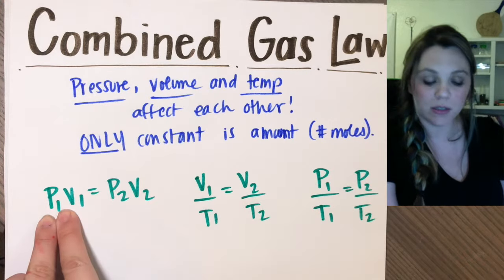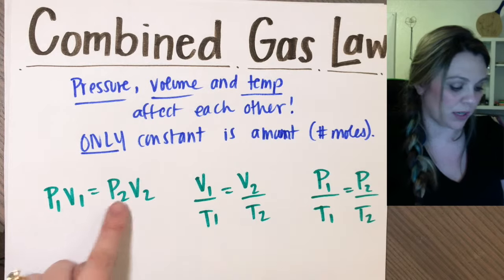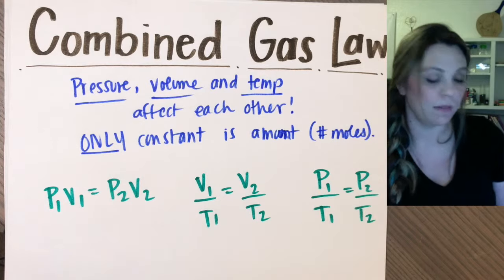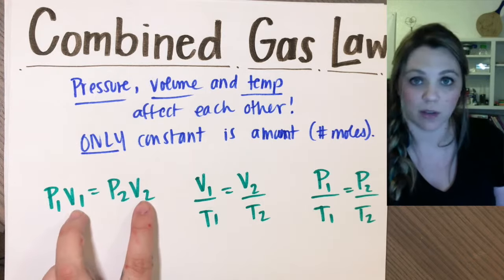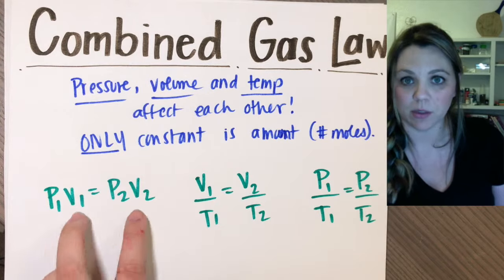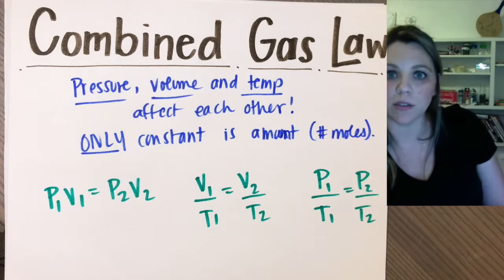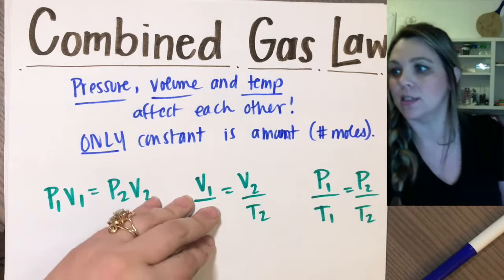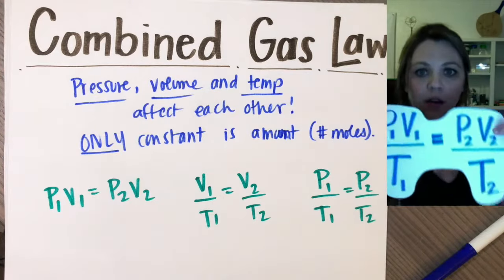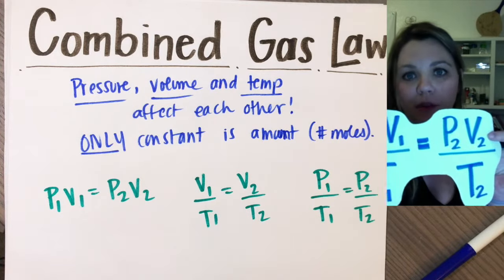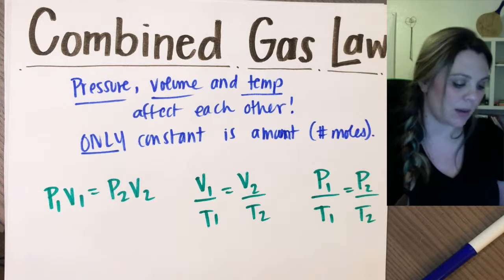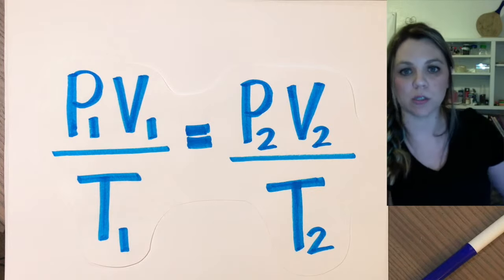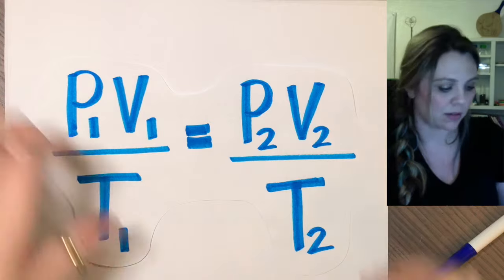The ones that are dealing with all of the other types of variables we're going to look at. If you notice, pressure always on the numerator, volume always on the numerator for Boyle's law and Charles's law, temperature always on the denominator for Charles and Gay-Lussac's. When I combine all three, that's exactly what ends up happening. Pressure and volume are on the numerator, temperature is on the denominator. You're just smushing all of those three laws together.